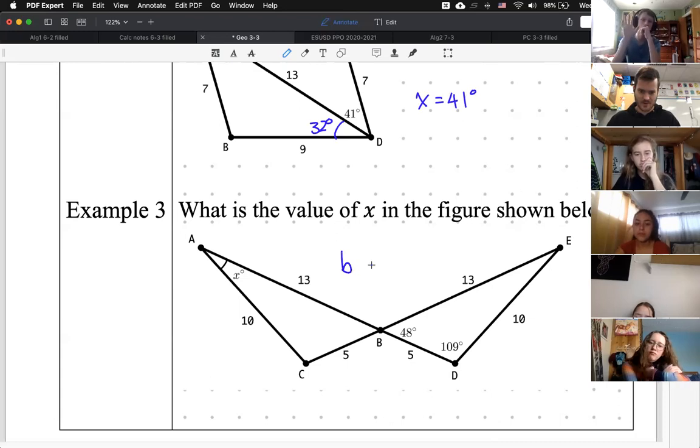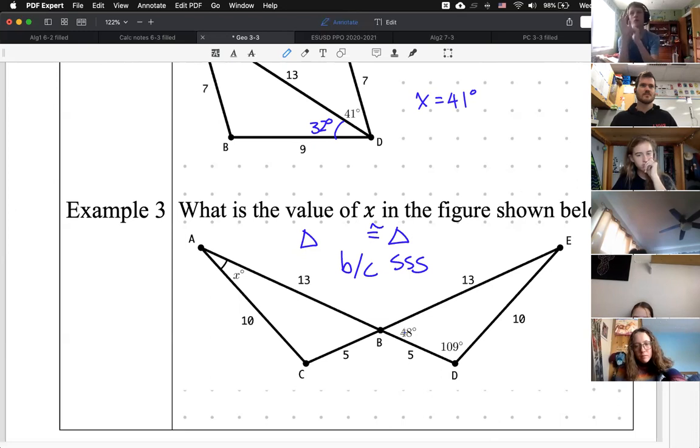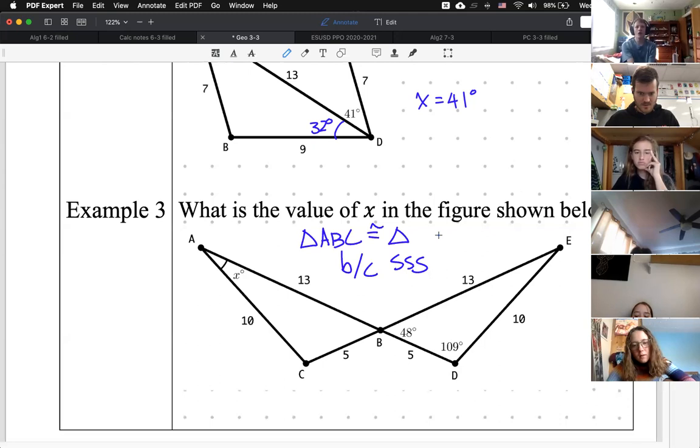But what is the congruency statement? Triangle blank is congruent to triangle what? Who can write the congruency statement for these two triangles? I like to get more new people, and I feel like I'm always calling them Charles, Kira, and Asha. Yeah, Ulysses. I've only called anyone so far. Is it like A, B, C is equal to E, D, or E, B, D? E, B, D, yeah. Nice. So, we have the correct congruency statement.